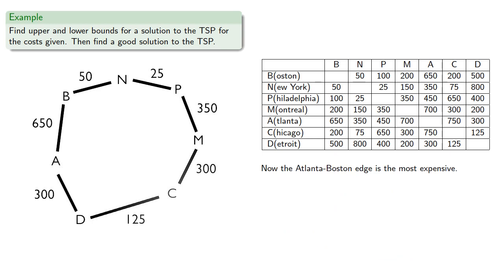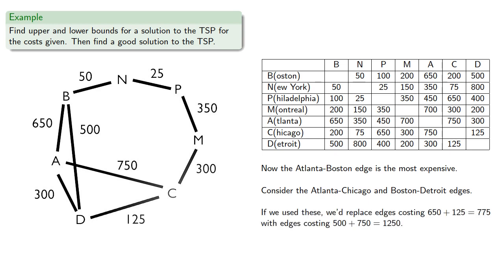Now the Atlanta-Boston edge is the most expensive. So let's consider Atlanta-Chicago and Boston-Detroit. If we use these, we'd replace edges costing 775 with edges costing 1250. But that's more, so we won't do it.